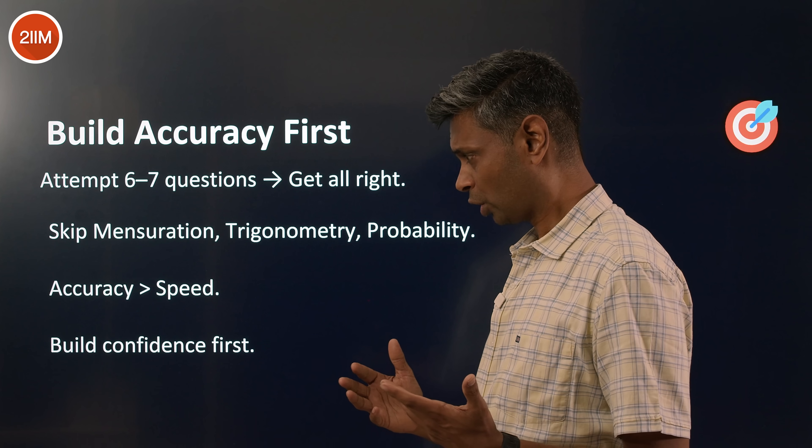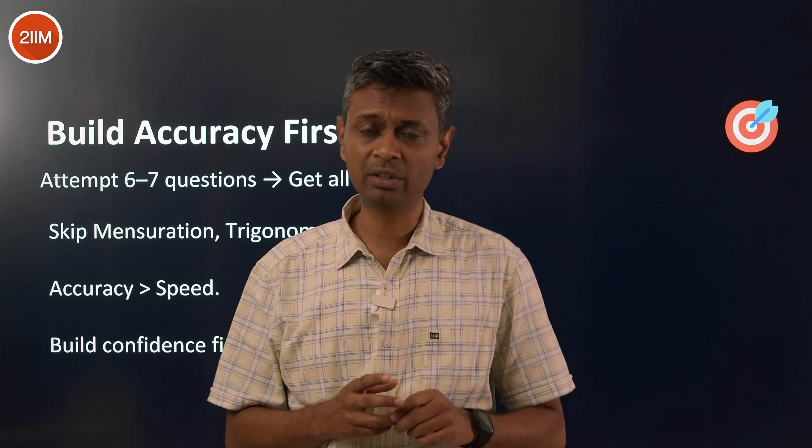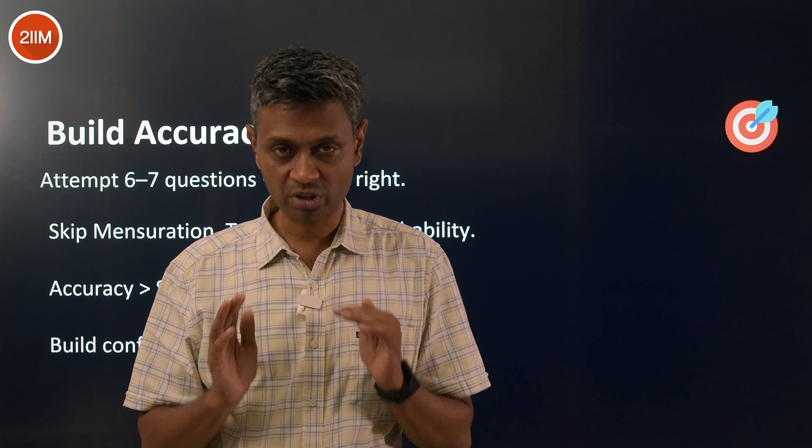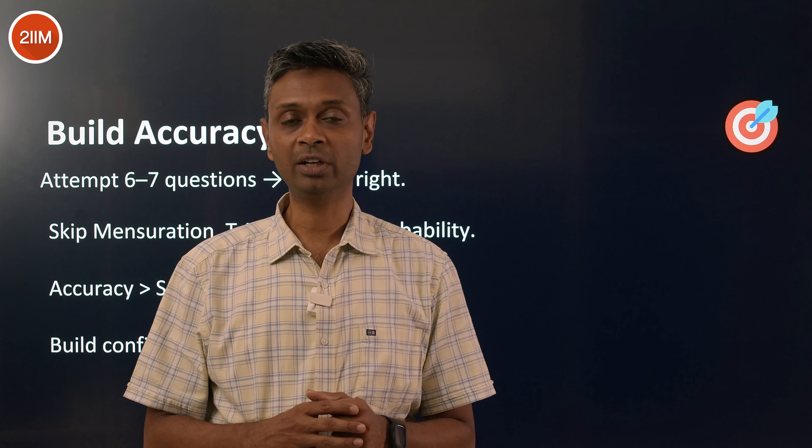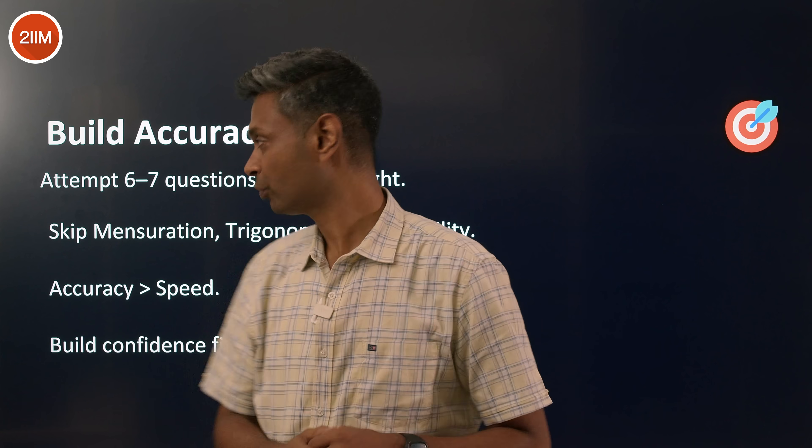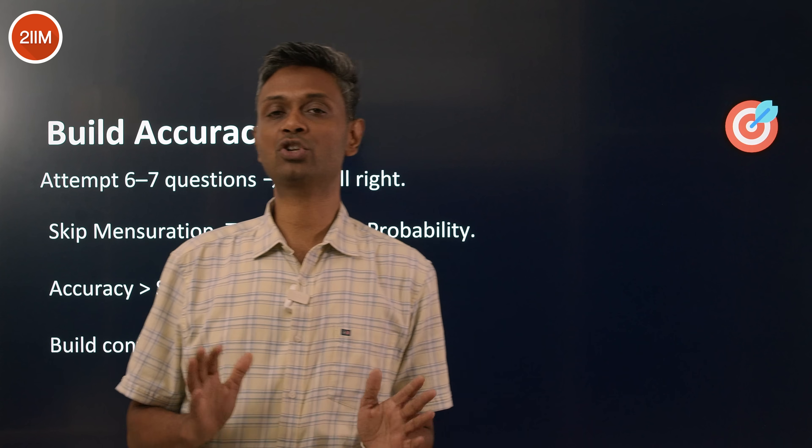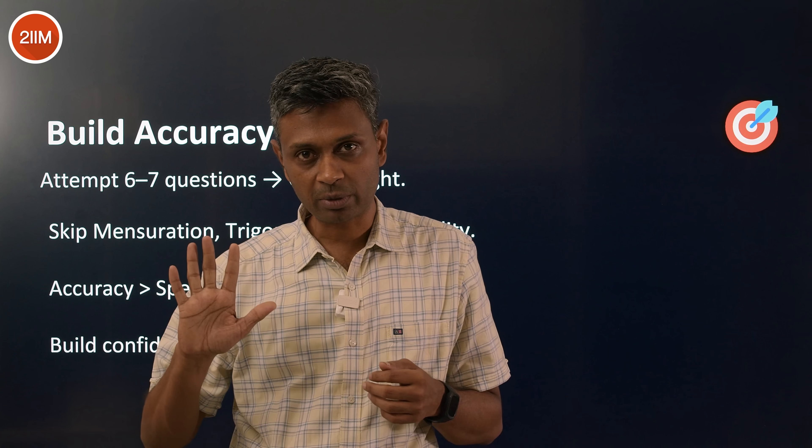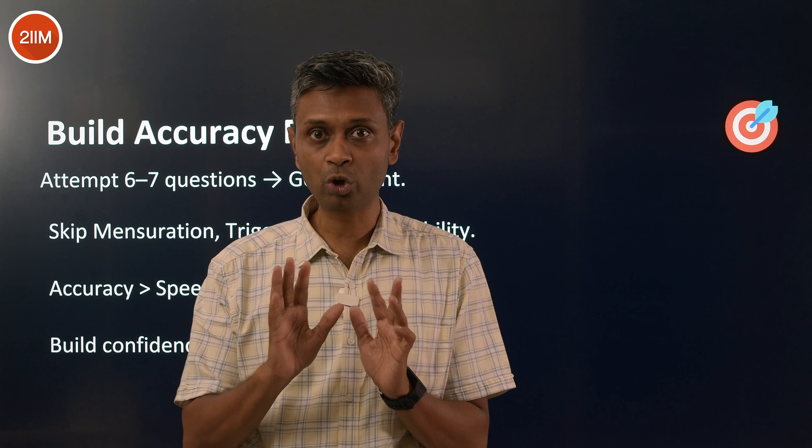When you are focusing on this 6-7 questions, absolutely accuracy matters. The strategy to getting 15 marks is not attempting 10 questions and getting 6 correct. It's attempting 5 questions and getting all of them right, 6 questions and getting all of them right. You need to have this belief that any quant paper, I will find my 6 questions, take 5 minutes per question, spend 30 minutes, have another buffer of 5 more minutes, 35 minutes total, get 5 questions right.